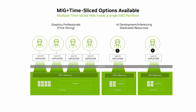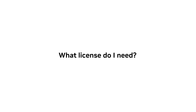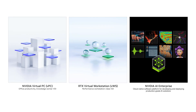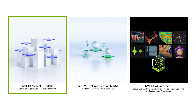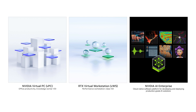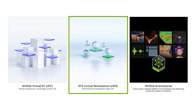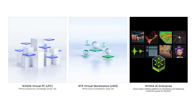To use vGPU with MIG, what license do you need? Nothing changes from before with respect to licensing — you just buy the right license for your workload. If you're using RTX Pro 6000 with MIG and vGPU for office worker VDI workloads, you would need a VPC license. For graphics professionals or data scientists wanting an AI workstation, you would need RTX Virtual Workstation licenses. For pure compute or artificial intelligence workloads on a hypervisor, the product you need is NVIDIA AI Enterprise.